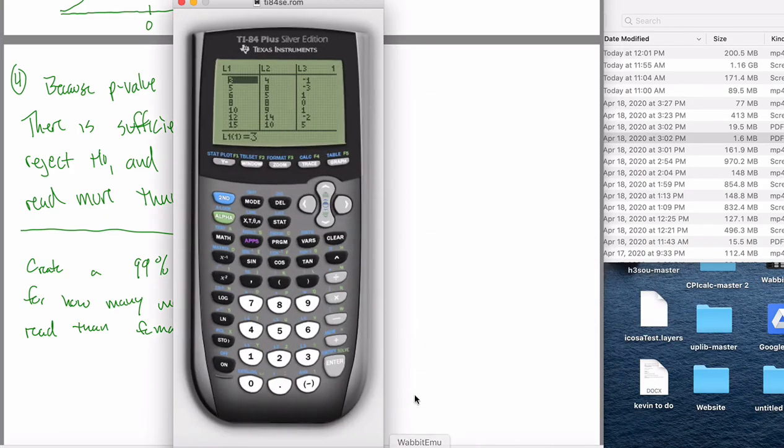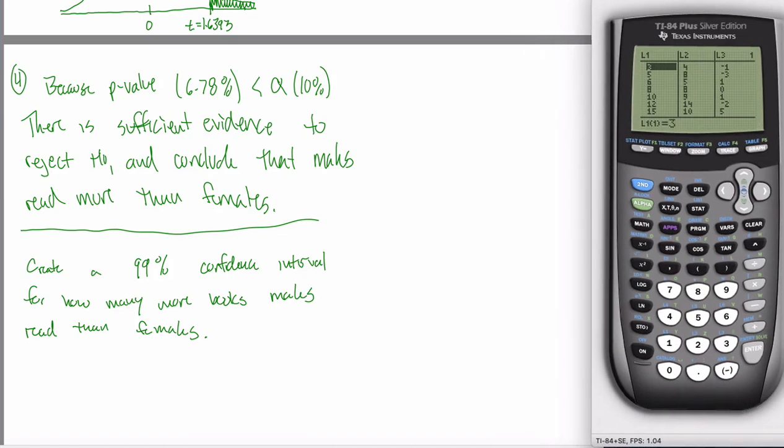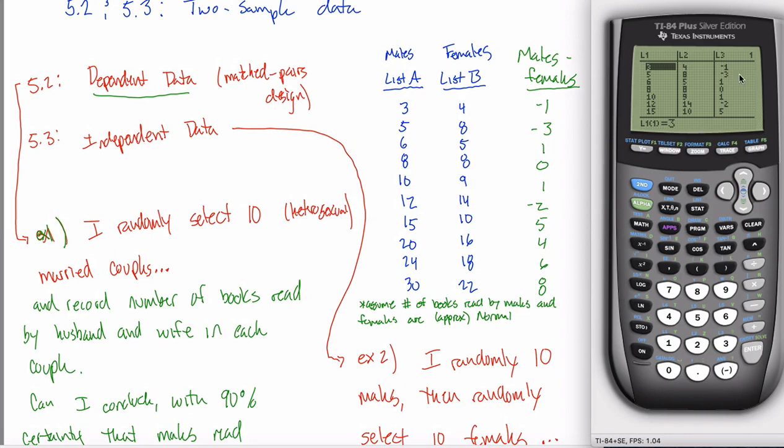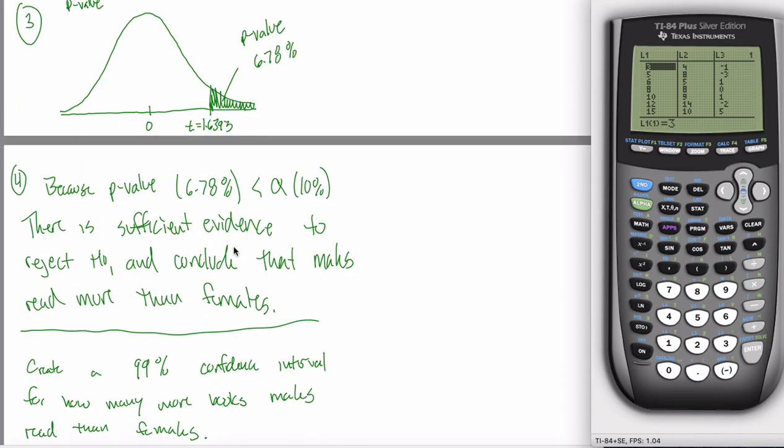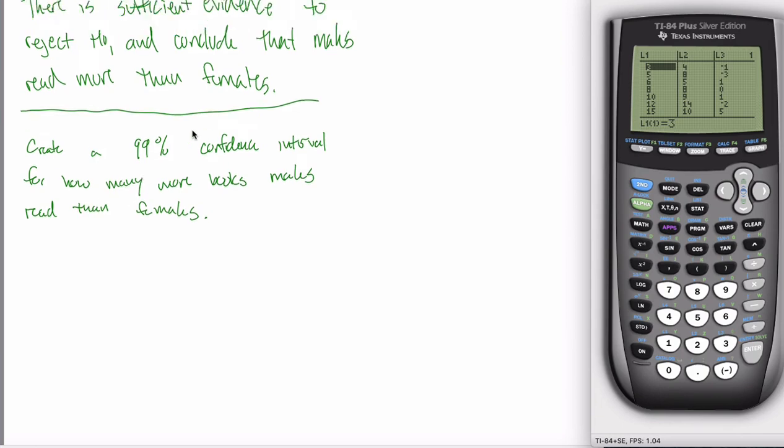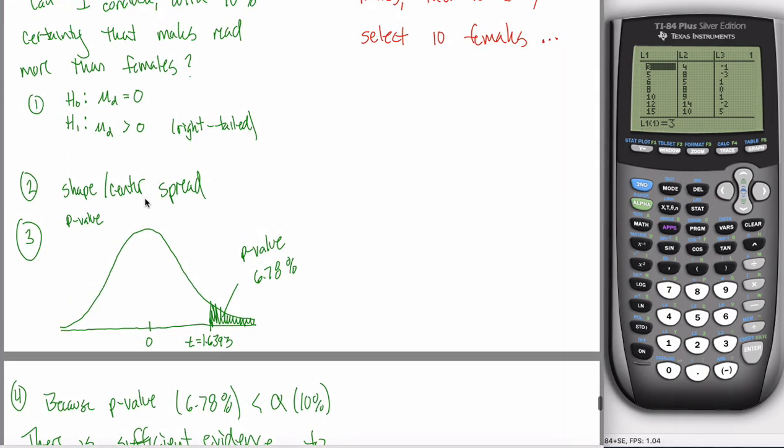And I don't think it'll surprise you to find out that what we're going to do is pretty similar to what we did with hypothesis testing, where we only worry about L3, this difference column here. But instead of doing a t test, we're going to do a t interval. When we make confidence intervals in the past, it was a three step process that sometimes had this additional fourth step. The first step you would state the shape, center, and spread of the distribution. Although as I told you in the previous video, we're not going to worry about shape, center, and spread anymore in this class.